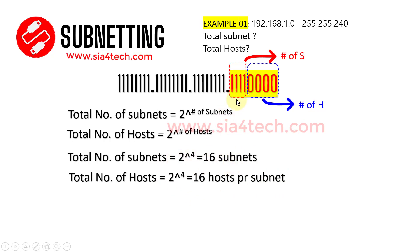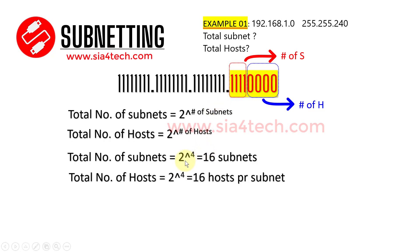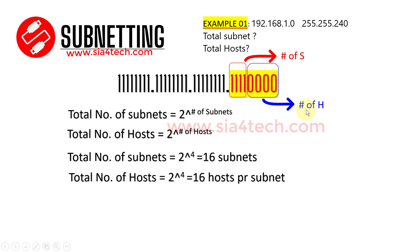To summarize: determine the IP address class, convert to binary, and from the binary — bits that are on count toward the number of subnets, and bits that are off count toward the number of hosts. Let's go to the next example.